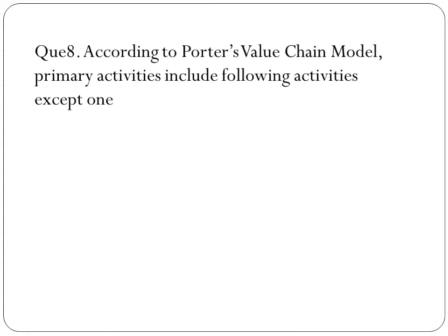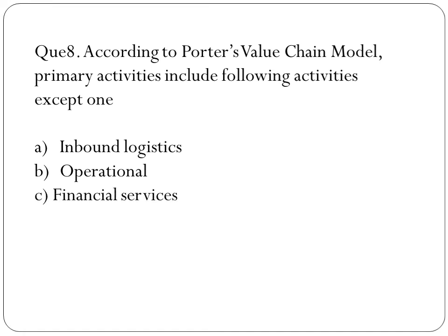Next question: according to Porter's value chain model, primary activities include the following activities except one. The options are inbound logistics, operations, financial services, or outbound logistics. The activity not involved in Porter's value chain model is financial services; all other three activities are included.